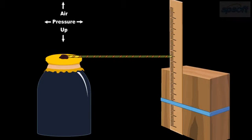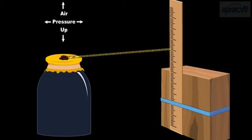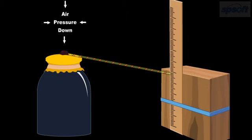When the pressure goes up, the cap is pushed in and the straw rises. When the pressure falls, the straw moves down. What is the reason?